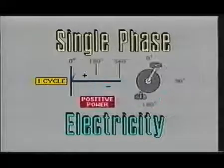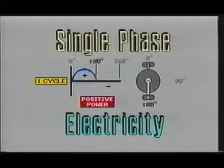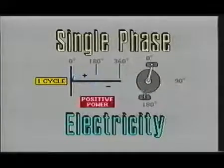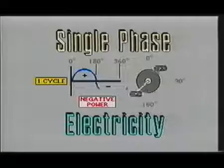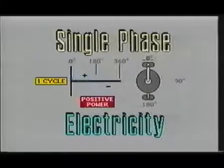Here you see the AC sine wave being illustrated with a bicycle pedal used to illustrate the 360 degree cycle. When the front pedal is between zero and 180 degrees, the pedal is in its positive power portion of the 360 degree cycle.